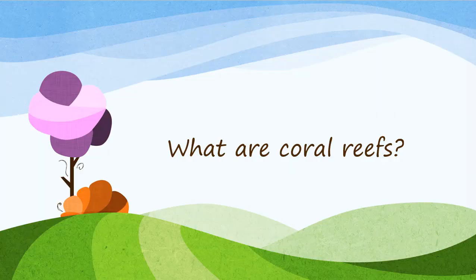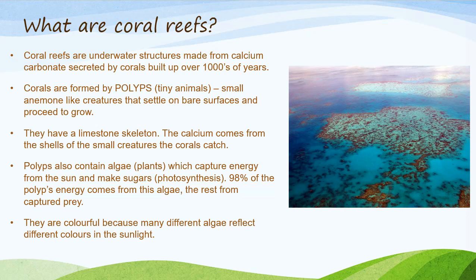So what are coral reefs? Coral reefs are underwater structures made from calcium carbonate secreted by corals, built up over thousands of years. Corals are formed by polyps, which are tiny animals — small anemone-like creatures that settle on bare surfaces and proceed to grow. They have a limestone skeleton; the calcium comes from the shells of small creatures that the corals catch. Polyps also contain algae, which capture energy from the sun through photosynthesis. 98% of the polyps' energy comes from this algae, the rest from captured prey. They are colourful because many different algae reflect different colours in the sunlight.